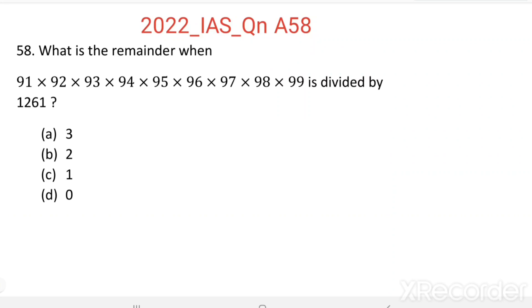Question number 58: What is the remainder when 91×92×93×94×95×96×97×98×99 is divided by 1261? Here we want to find the remainder when this product is divided by 1261.